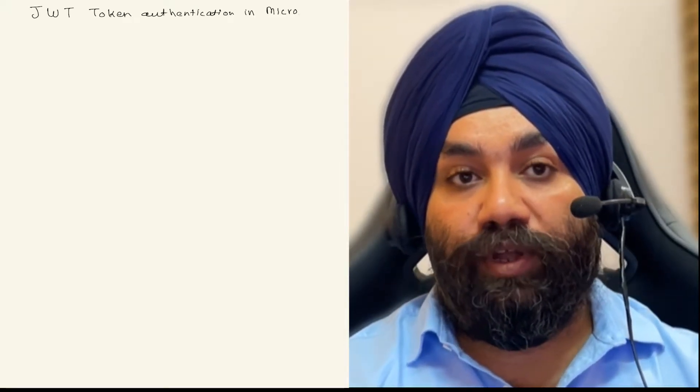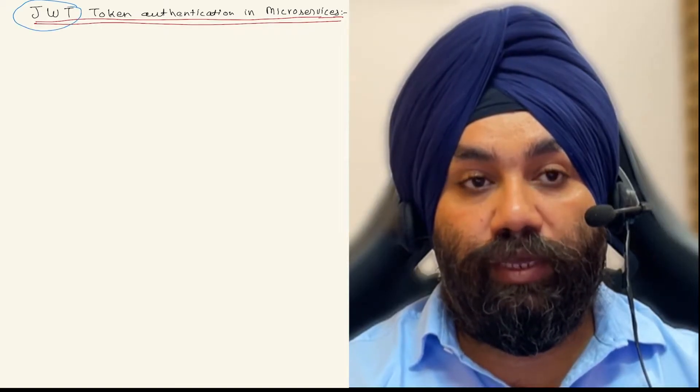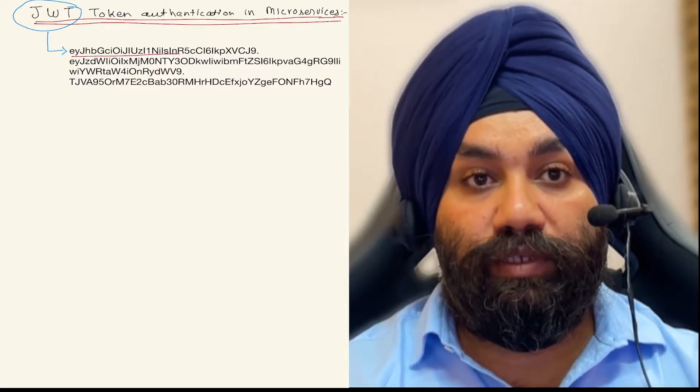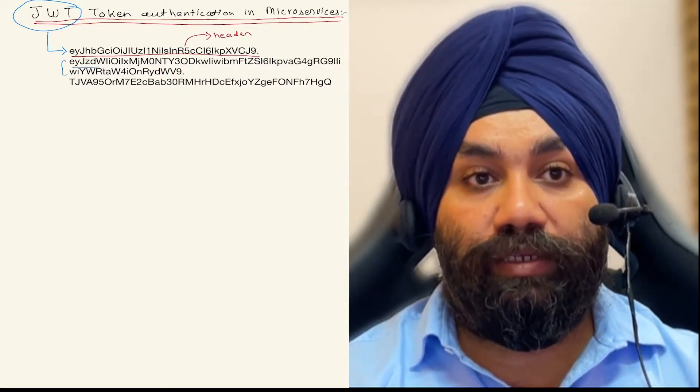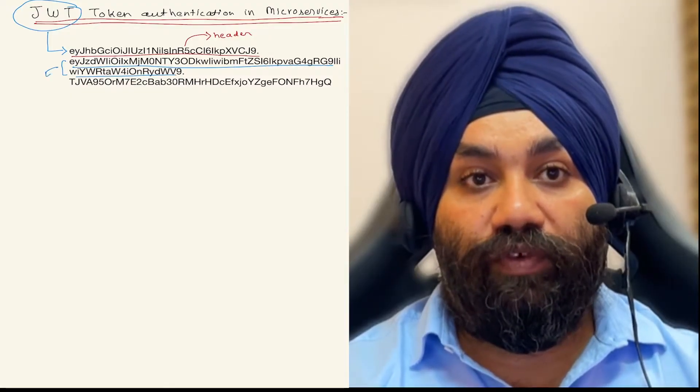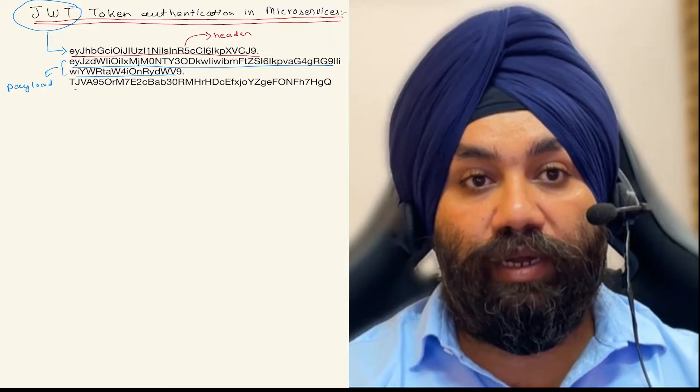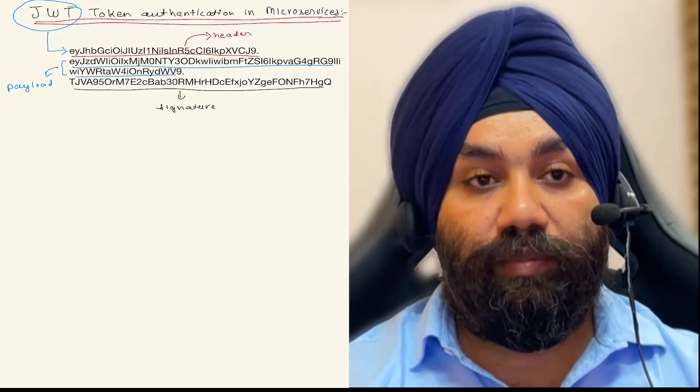So we'll learn about JWT authentication in microservices. First of all, we learn what is a JWT. This is a sample JWT token, how it looks, and you can see it is divided into three parts separated by dots. First part is the header, second part is the payload, the third part is the signature of the JWT token.